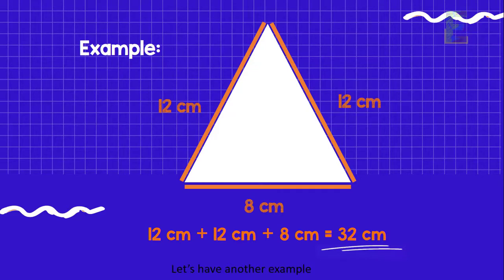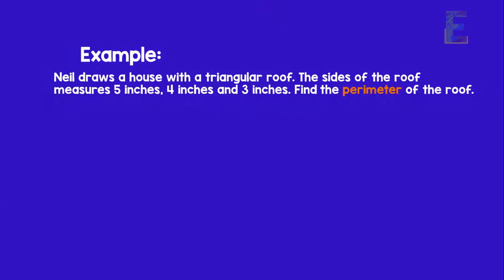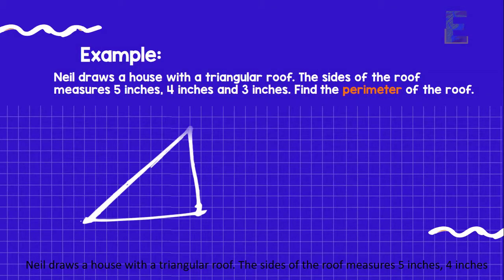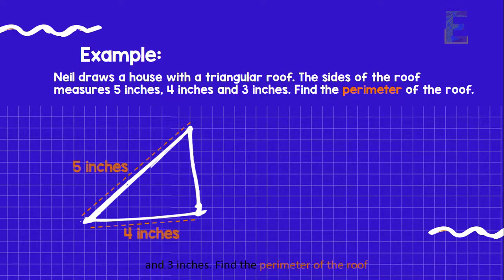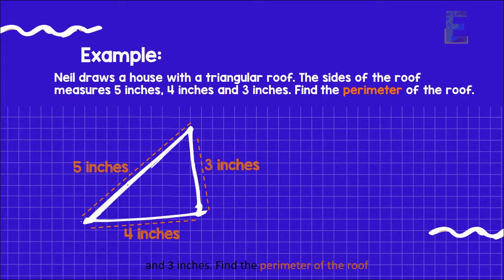Let's have another example. Neil draws a house with a triangular roof. The sides of the roof measures 5 inches, 4 inches, and 3 inches. Find the perimeter of the roof. I will give you 20 seconds to answer this. Time starts now.